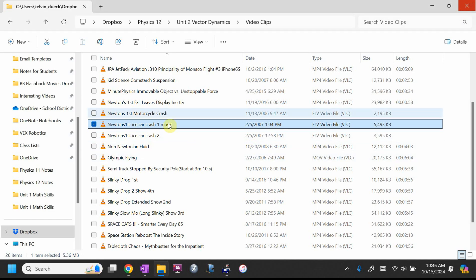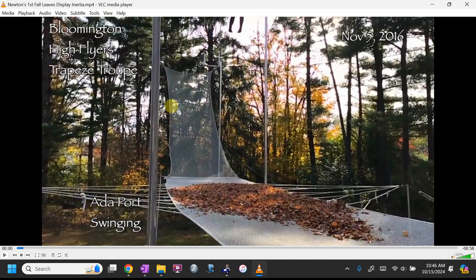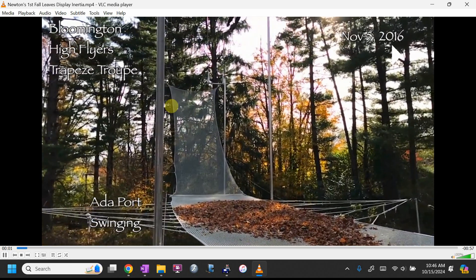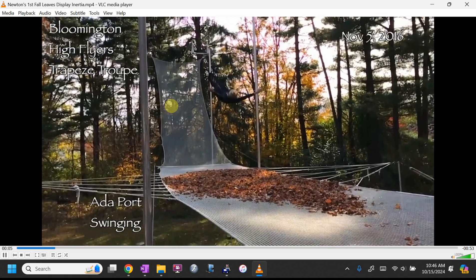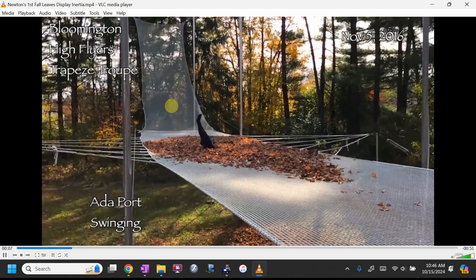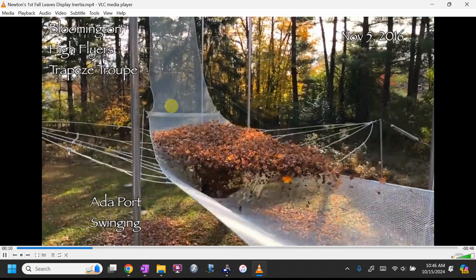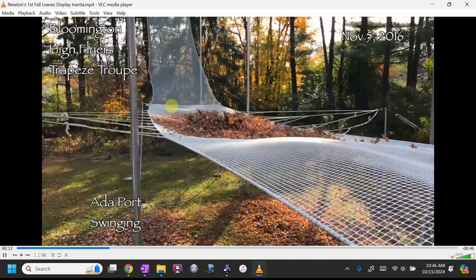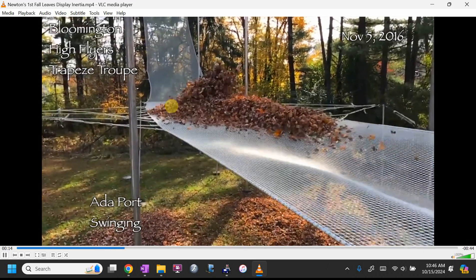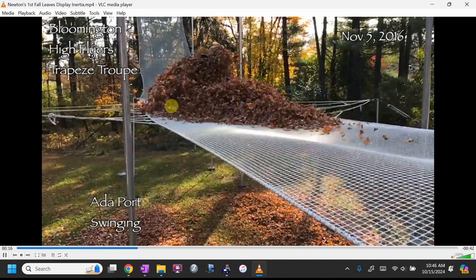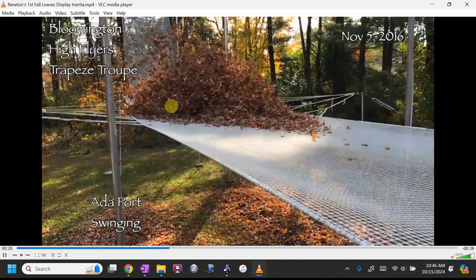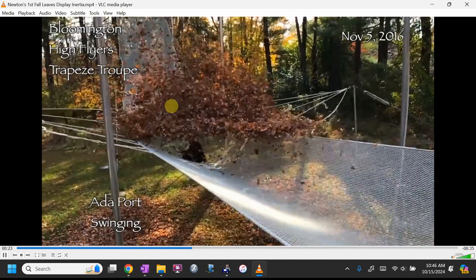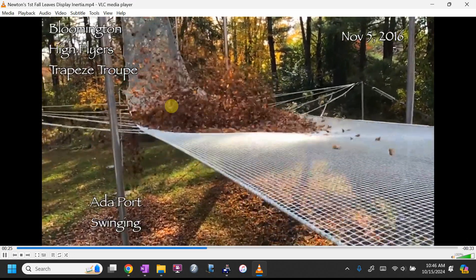So there's one. Here's another one. These leaves have inertia. So this person is going to apply a force to the net. Watch the leaves. No force was applied to the leaves, so they remain at rest. At least for a while. And then the net applies a force upwards on the leaves, and so they bounce upwards. That's a pretty nice example of Newton's first law. The leaves stayed where they are.